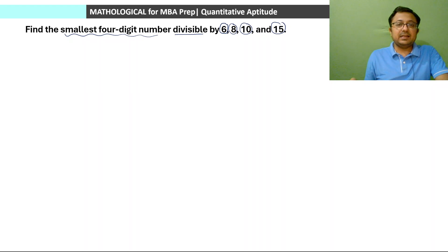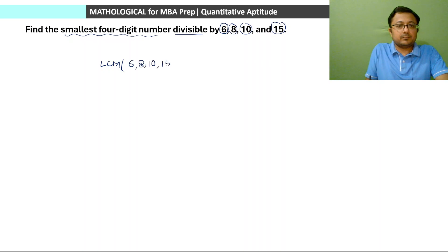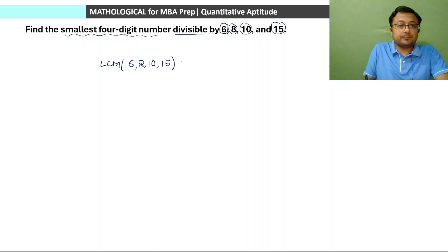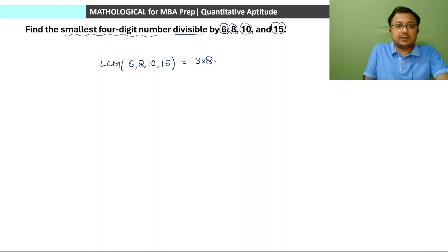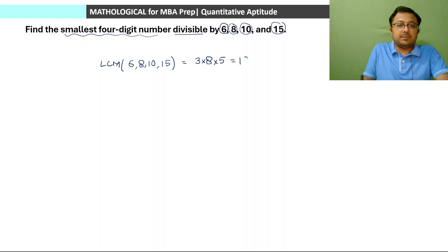If we had no condition of the smallest four-digit number, the least number divisible by 6, 8, 10 and 15 is the LCM itself — least common multiple. LCM of 6 and 8 will be 24, multiplied by 5 for the factor in 15, giving LCM = 120.